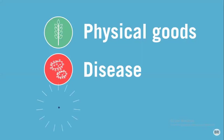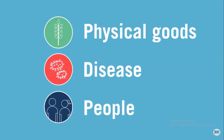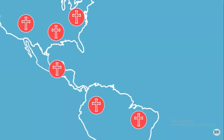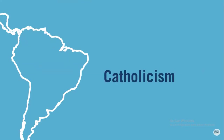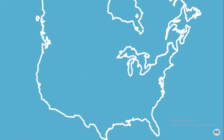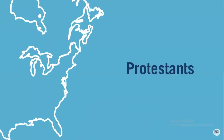The international slave trade also introduced new diseases such as yellow fever and strains of malaria to the New World. Smallpox was by far the biggest culprit, as up to 95% of some Native American populations were wiped out from this single disease, devastating Native American populations and cultures. In addition to physical goods, disease, and people, the Colombian Exchange also resulted in the widespread growth of Christianity.